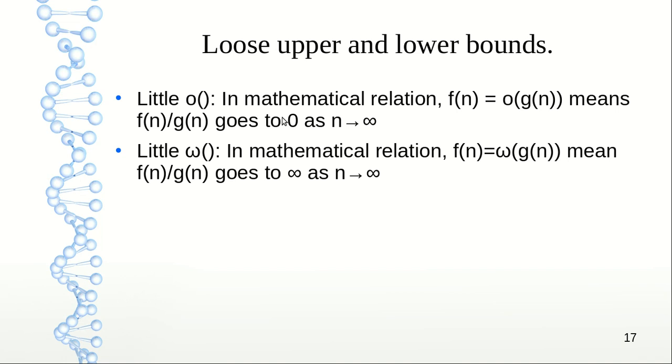So how do we show it mathematically? We show it using small o, little o. In mathematical relationship, f(n) equals little o of g(n) if f(n) divided by g(n) goes to 0 as n tends to infinity. We can use some examples—let f(n) be n². Then clearly as n tends to infinity, this expression will go to 0.